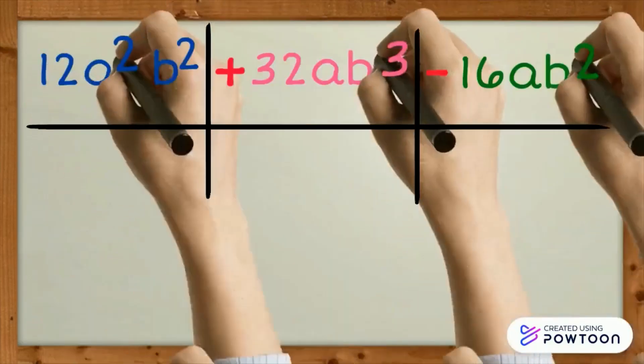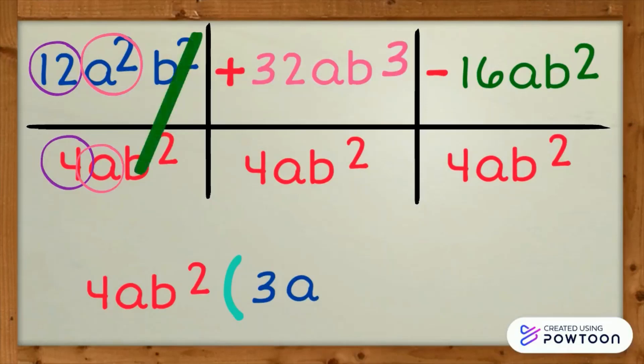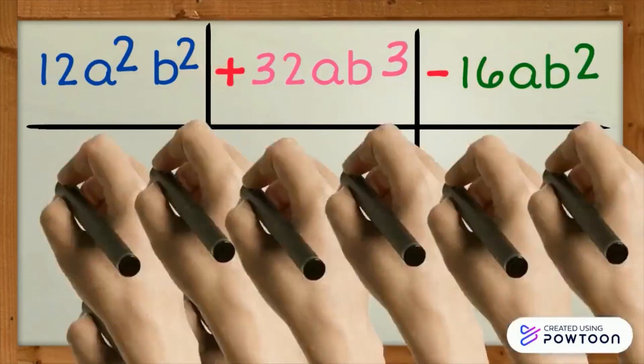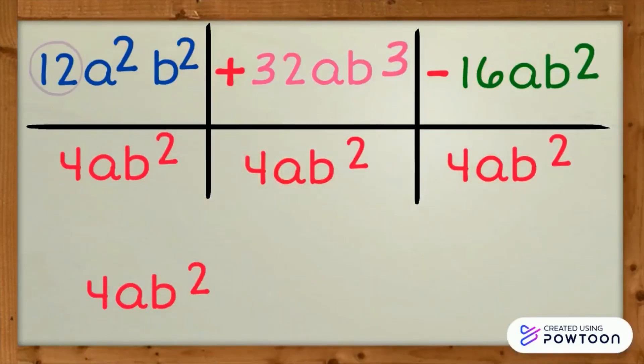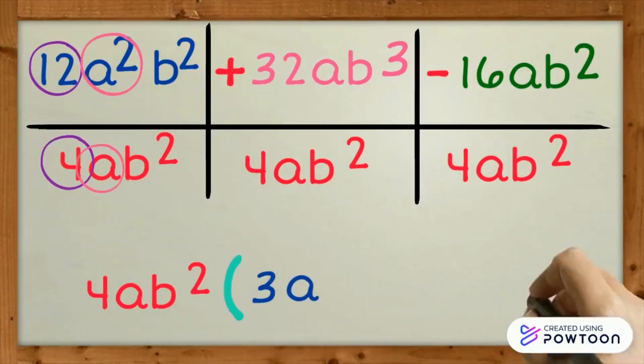Divide each term by 4ab squared. 12 by 4 is 3. A squared by A is A. B squared by B squared is 1. Any factor multiplied by 1 is the factor itself. We will not write that anymore. It is cancelled out.